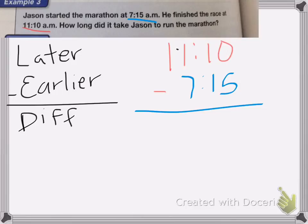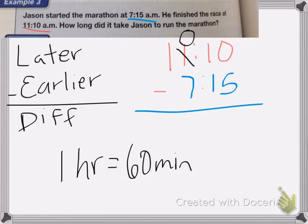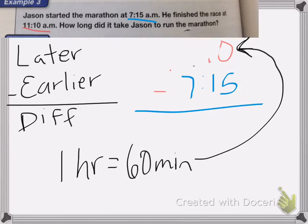Just like normal, we would cross this out and that would become a 0, so it's now 10 o'clock. But instead of just adding a 1 here, 1 hour is equal to 60 minutes. So I need to add 60 minutes to this amount, because this is my minutes section. So 10 minutes plus 60 minutes is the same as 70 minutes. I'm going to rewrite this as 10:70. Now I can subtract.